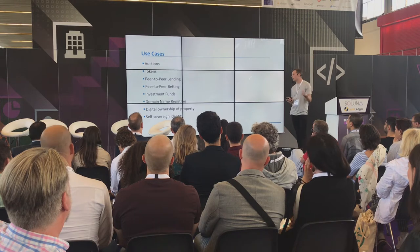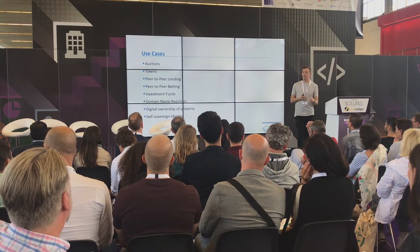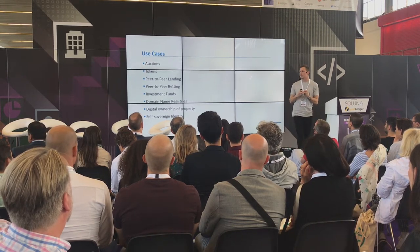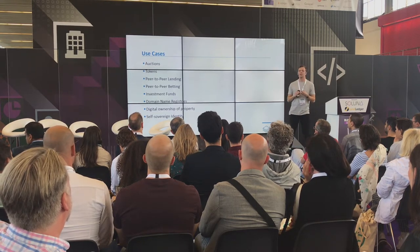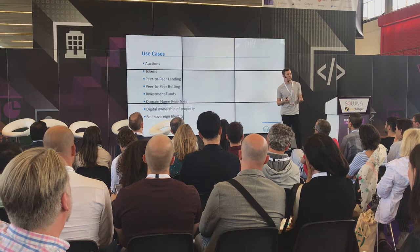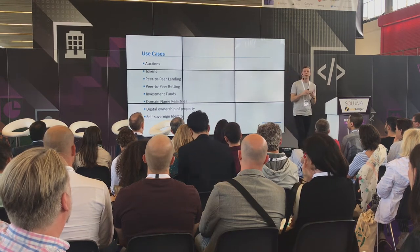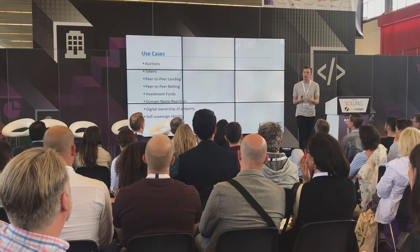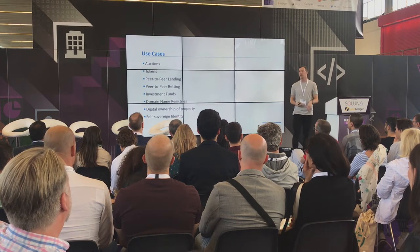Getting down to the really complex side of things, you also have areas such as digital ownership of property, where assets can be tracked on chain, and self-sovereign identity. This is an idea where individual identity can be stored on chain — everyone manages their own identity, and rather than data being managed by some organization, you control it yourself and give it out in a cryptographic way.